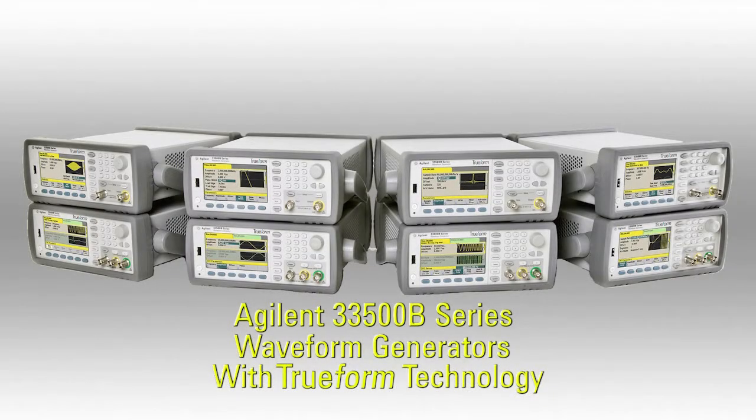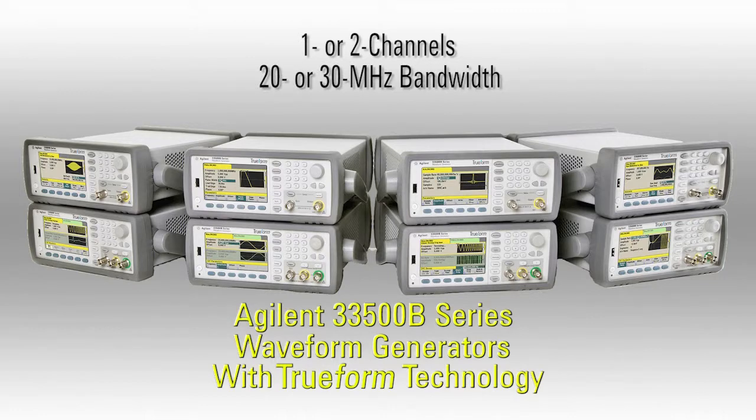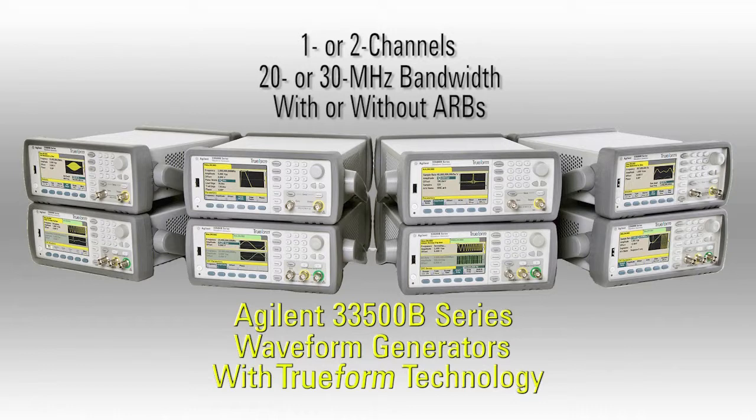The 33500B generators are available in one or two channel versions with 20 or 30 MHz output bandwidth and optional arbitrary waveform capability, so it's possible to get the performance level you need now while upgrading your generator in the future as your requirements change.